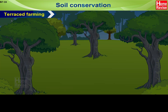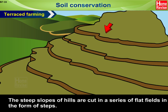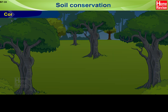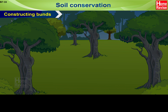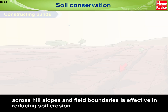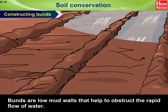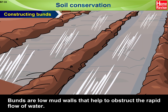Terraced Farming: the steep slopes of hills are cut in a series of flat fields in the form of steps. This is effective in controlling soil erosion. Constructing bunds across hill slopes and field boundaries is also effective in reducing soil erosion. Bunds are low mud walls that help to obstruct the rapid flow of water.